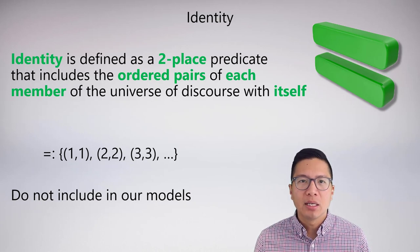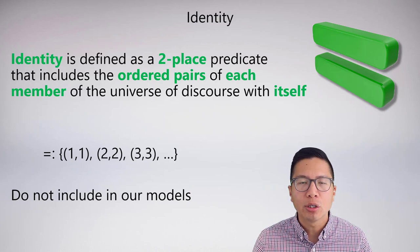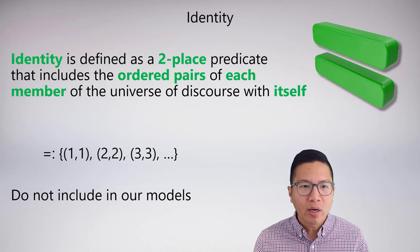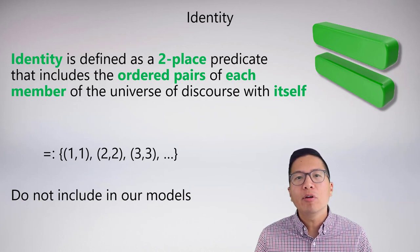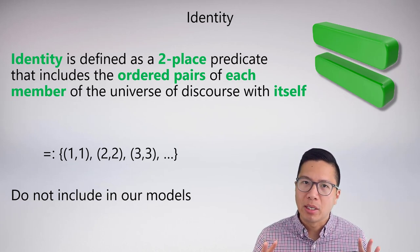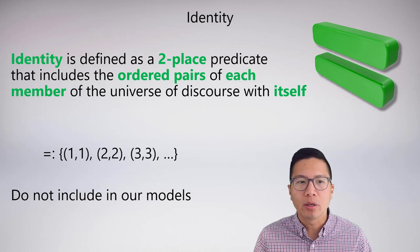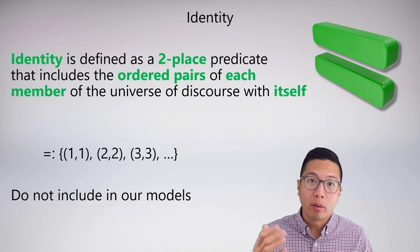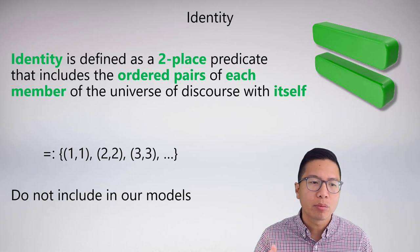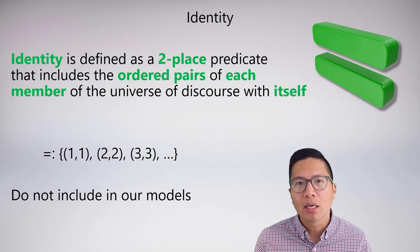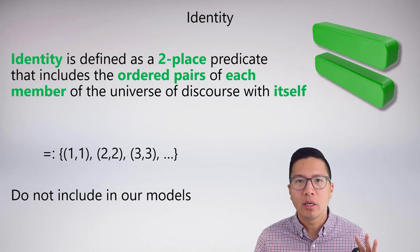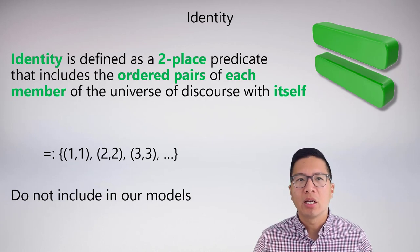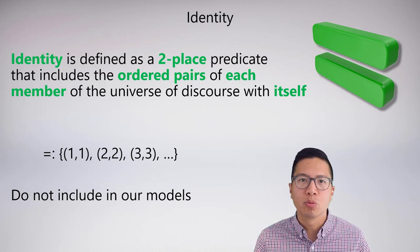It's worth pointing out that identity itself is a special two-place relation, and we can define it extensionally as the set of ordered pairs of every member of the universe with itself — because identity means they are equal. So the definition of identity would include: one is identical to one, two is identical to two, three is identical to three, and so on. However, even though this is the case, if you ever see identity in a question, do not include this information in your model — it is understood as the definition of identity and doesn't need to be stipulated.